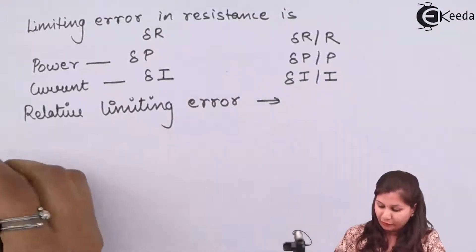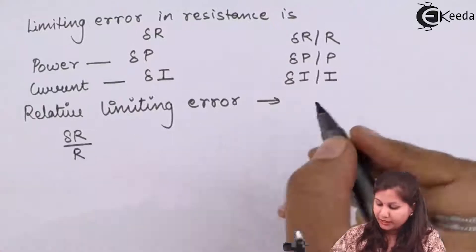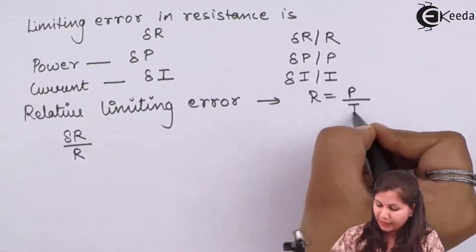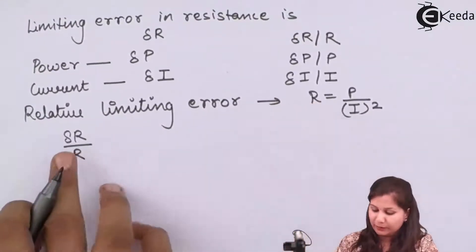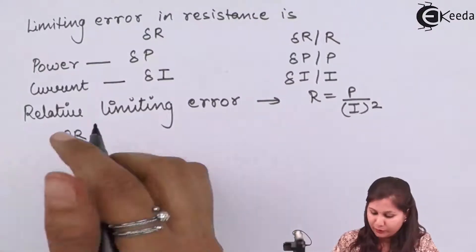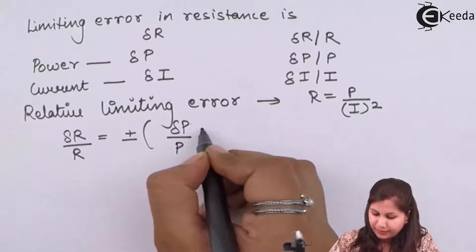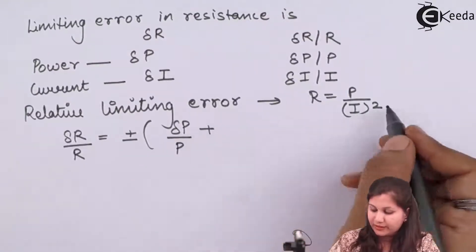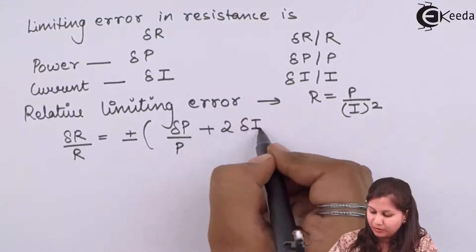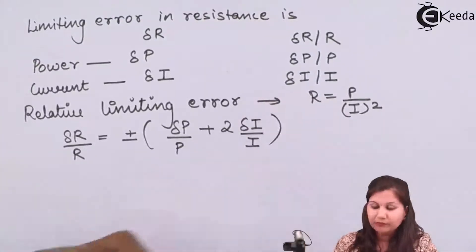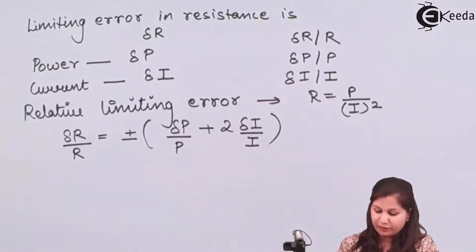Now writing the formula for relative limiting error using R = P / I²: δR/R = ± (δP/P + 2 · δI/I). Because we have I squared in the formula, the error term for current is multiplied by 2, giving us 2 · δI/I. The values of these relative limiting errors are given to us in the question.